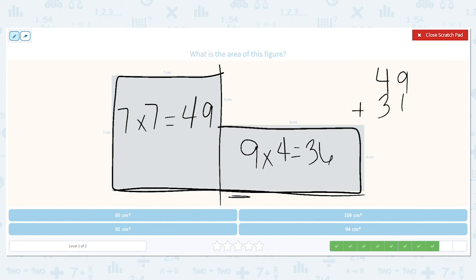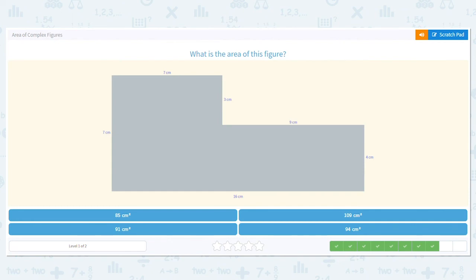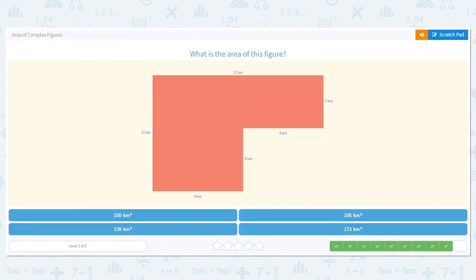So 9 plus 6 is 15, carry the 1. 3 plus 4 is 7, plus one more is 8. So my area is 85 centimeters squared. Let's do one more.